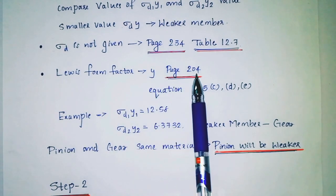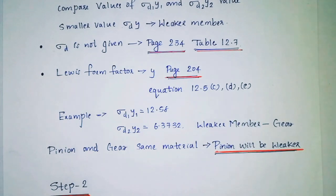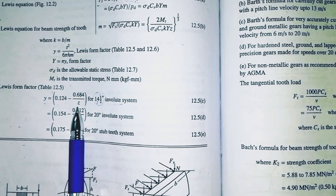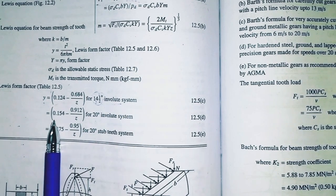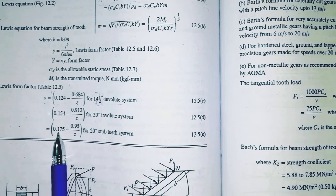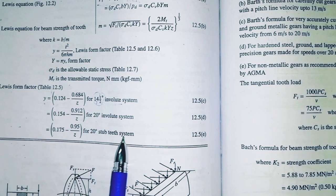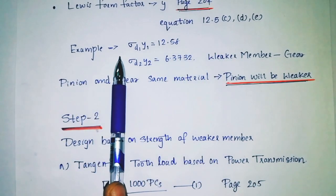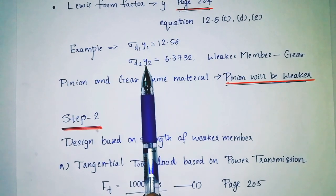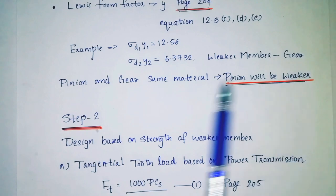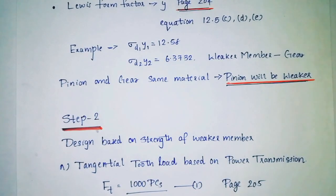This is the Lewis form factor. Page number 24, equation 12.5cde. The Lewis form factor equation: y equals 0.124 minus 0.684 divided by z for 14.5 degree involute system, 0.154 minus 0.912 divided by z for 20 degree involute system, and 0.175 minus 0.95 divided by z for 20 degree stub system.